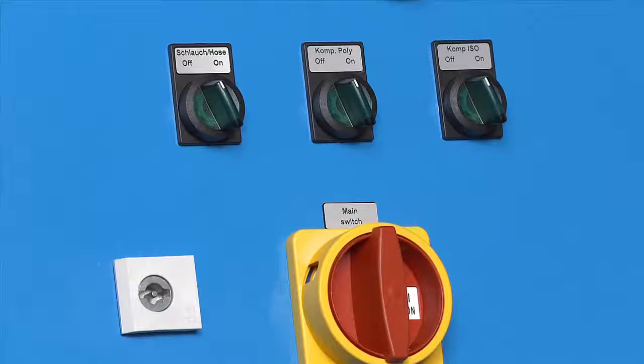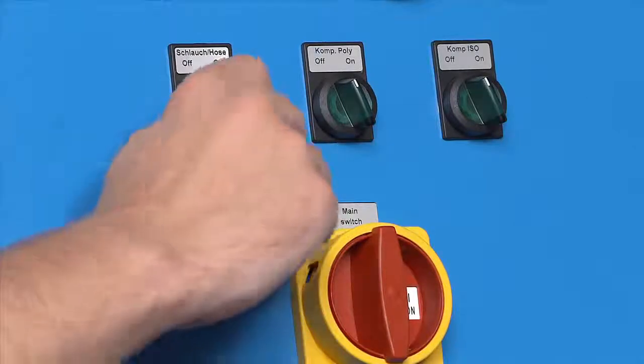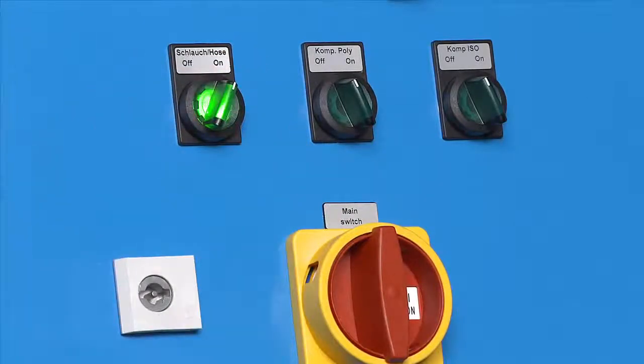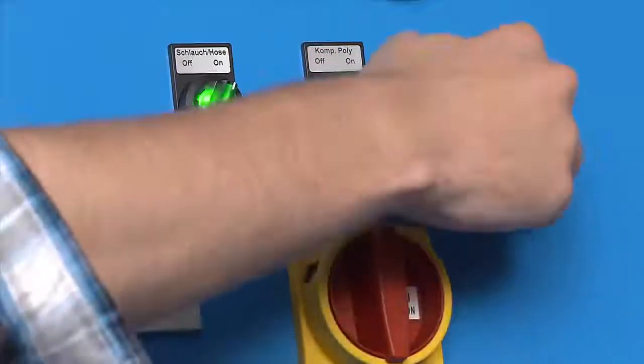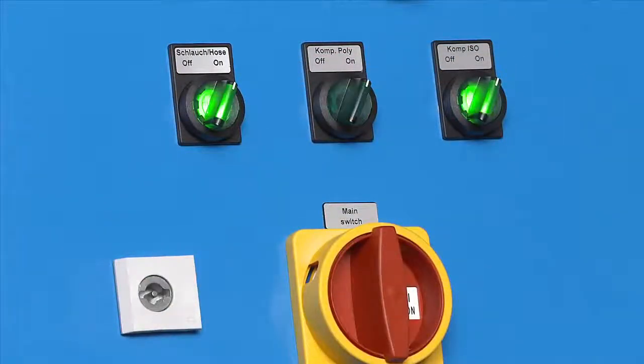Since the fluid heater's set point temperatures are reached sooner than those of the hose package, use the switch on the control box to first switch on the heating for the hose package and then the heating of the two fluid heaters. If the heaters are set to half power, the switches will blink alternately. Once the set temperatures have been reached, the lights go out.